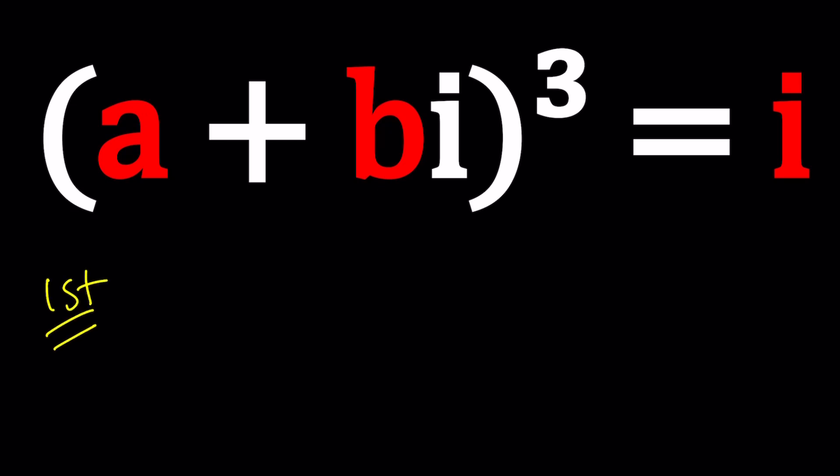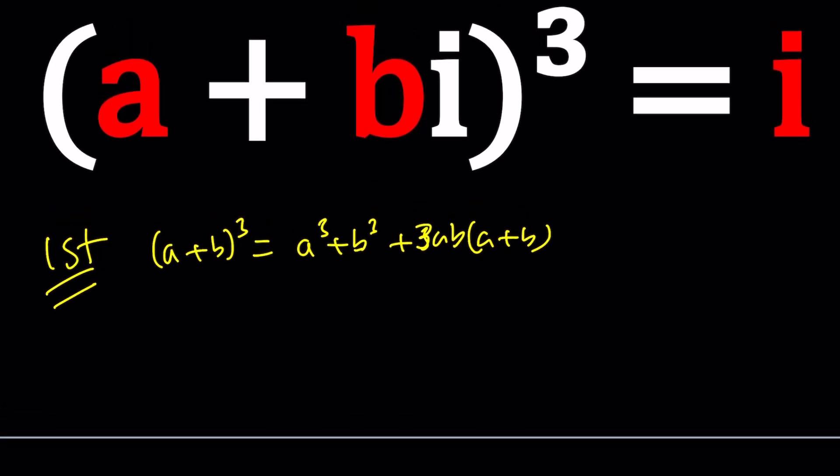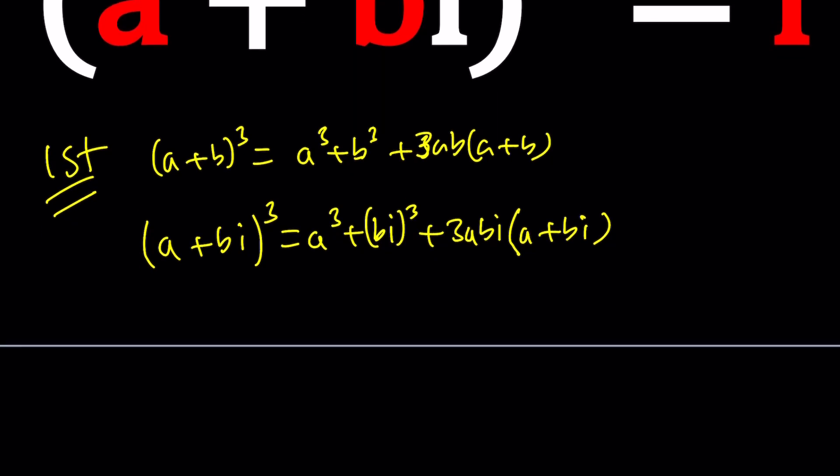We're going to go ahead and cube A plus B I. When you cube A plus B you get A cubed plus B cubed plus 3AB times A plus B. That's how I cube it and actually use this version with my cubic formula. But what happens if you replace B with B I? You get a variation of this and it looks like A cubed plus B I cubed plus 3AB times A plus B I. Or you could use the binomial theorem.